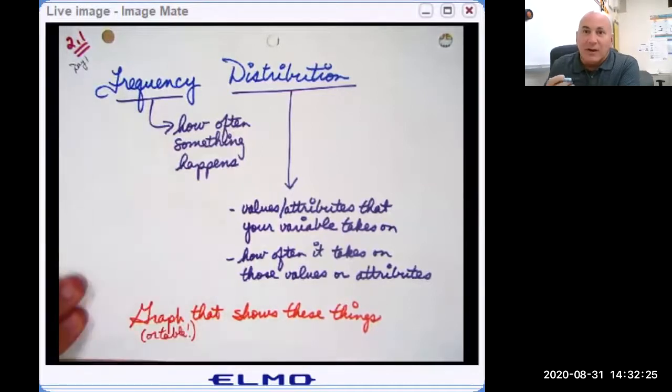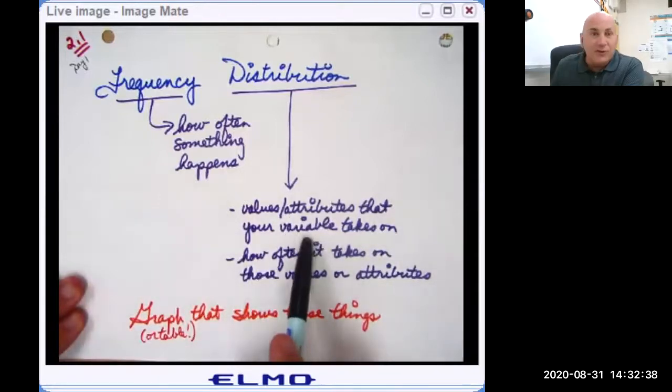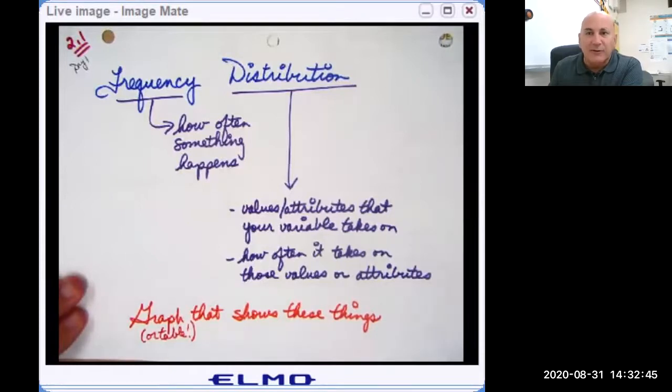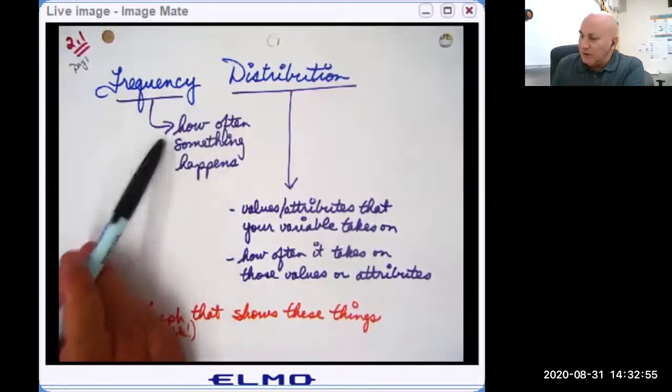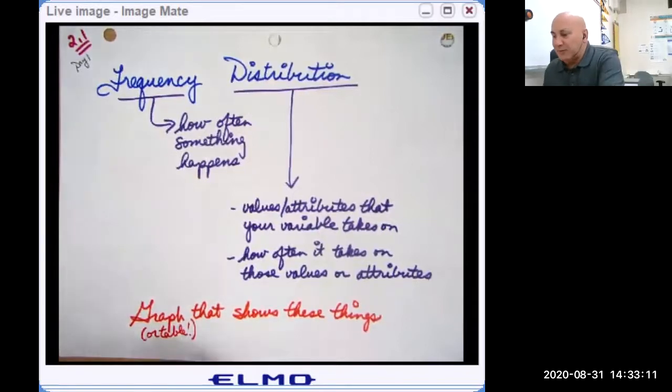The word frequency tells us how often something happens, and a distribution is a listing or a graph that tells us two things: the values or attributes that your variable takes on, and how often it takes on those values or attributes. So a frequency distribution tells us what happens and how often it happens. You could have your data in a table or in a graph, depending on what type of data you're looking at.